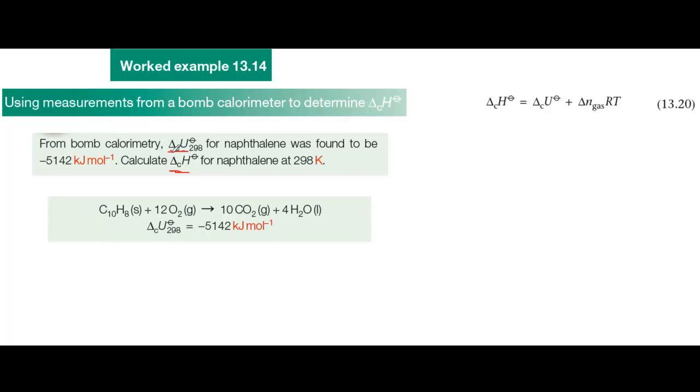So after you've done the experiment in the bomb calorimeter, you need to convert delta U to delta H. Worked example 13.14 is a typical example and it involves naphthalene C10H8. You'll use equation 13.20 to make the conversion. It's the same as equation 13.19 but it applies specifically to combustion.